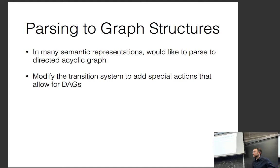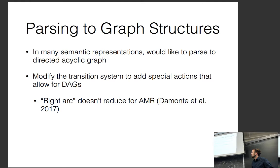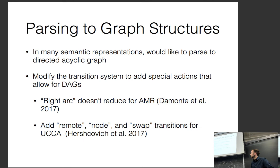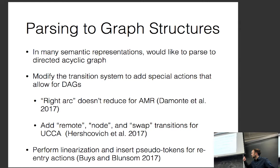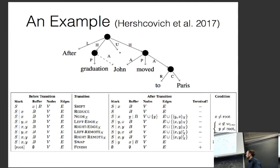The most common way to generate a graph right now is with a transition-based parsing algorithm with special actions added to handle the fact that you're making graphs rather than trees. For example, for AMR you can have a 'right arc not reducing' action that allows drawing arcs between multiple identical things. One example transition system adds actions beyond shift and reduce: node, left edge, right edge, left remote, swap, and finish.